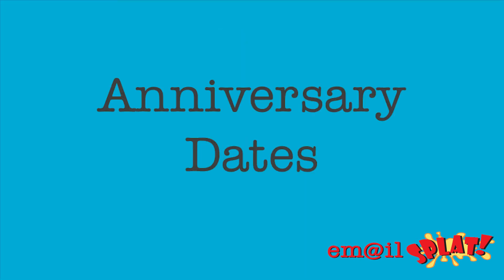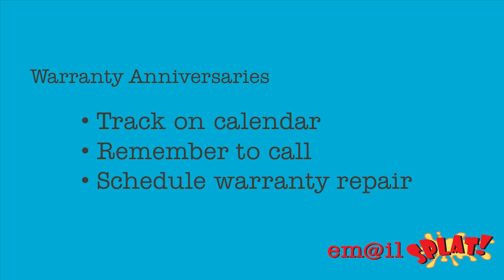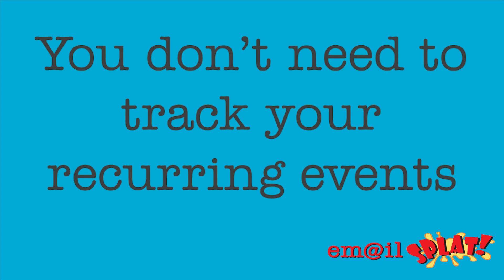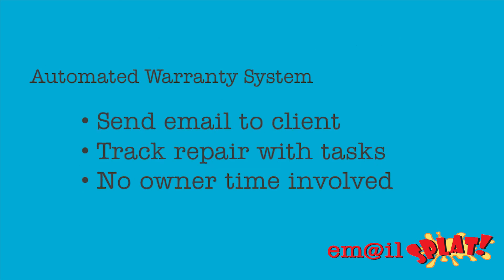How many anniversary-based events happen in your business? Almost all businesses have them, and they're hard to keep track of. When I owned a remodeling company, we used to call all our past clients as their warranty period was about to expire. My assistant had to track it on a calendar and then remember to let me know so I could call. If they had a warranty item, it was months before we got it fixed — it always fell through the cracks. Automation can easily remind you about anniversaries, and better yet, it can do something about it without you ever even knowing. If I had had an automated system back then, it could have sent an email to my past client without me needing to get involved, and we could have set up tasks to keep us on track with their repairs.